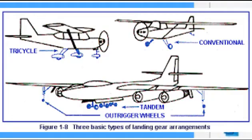Modified Tricycle Landing Gear. The C-5 landing gear is a fully retractable modified tricycle type with four main landing gear shock struts, with six wheels mounted on bogey-type units that retract into pods on each side of the aircraft. The nose gear is a four-wheel steerable unit, which retracts aft into the fuselage nose wheel well.